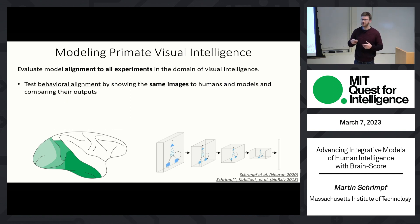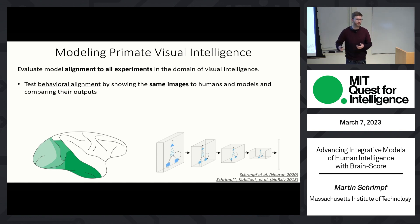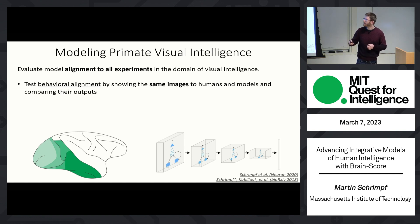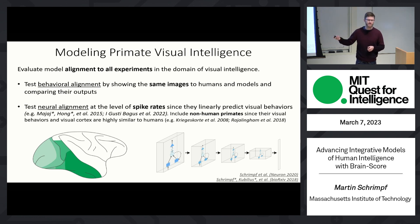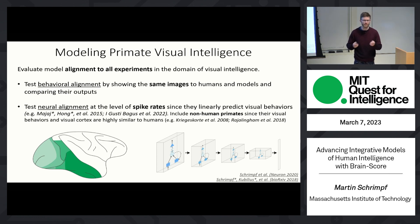There are two primary forms of testing we've done. One is behavioral alignment — we show the same images to the model that were shown to humans, and test how similar their outputs are. We also test neural alignment at the level of spike rates, which have been shown to predict behavior. We include macaque visual cortex, because it has been shown to be very similar to our own.